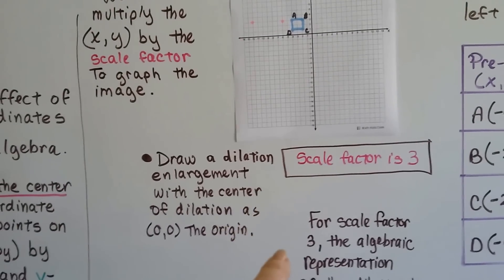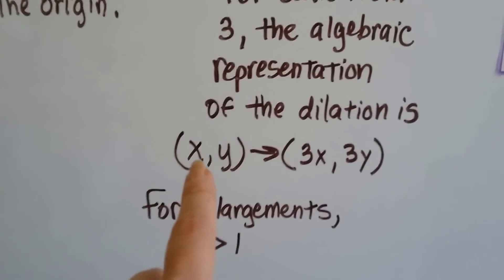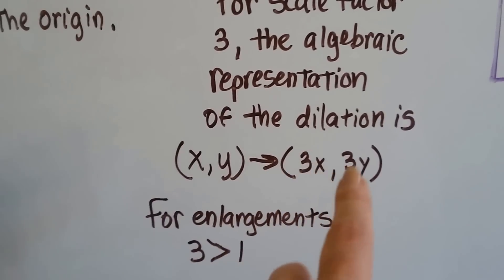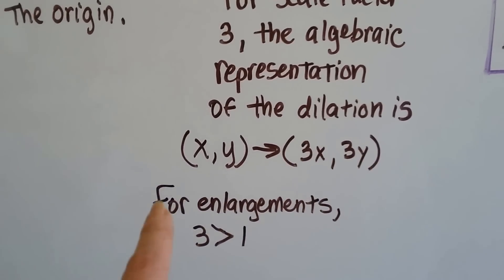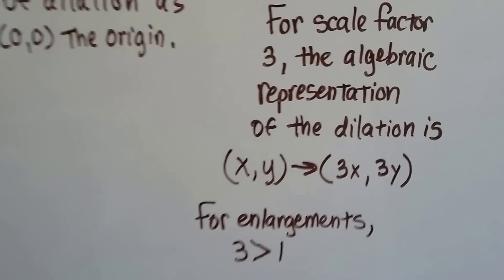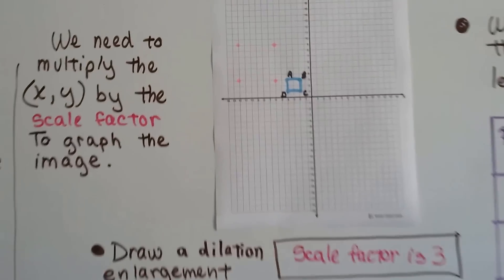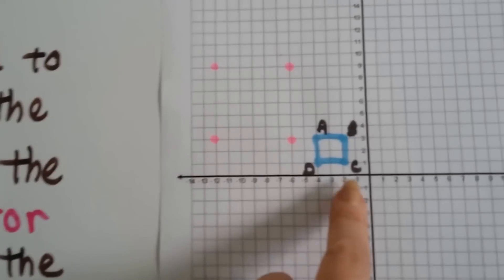For scale factor 3, the algebraic representation is going to be this: x and y will become 3x and 3y. And we know it's an enlargement because 3 is greater than 1. So we look at the points that blue is sitting on.